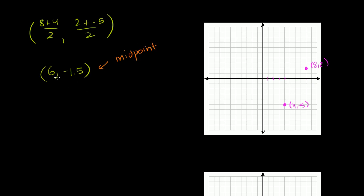Let's graph it just to make sure it looks like the midpoint. At x equals 6, y equals negative 1.5 — yep, looks pretty good. It looks like it's equidistant from both points. That's all you have to remember: average the x's, average the y's, and you've got the midpoint.